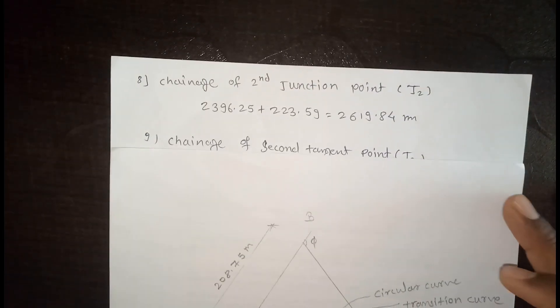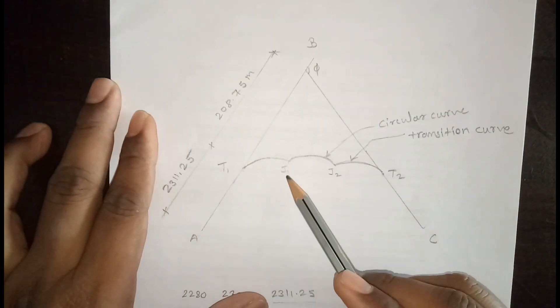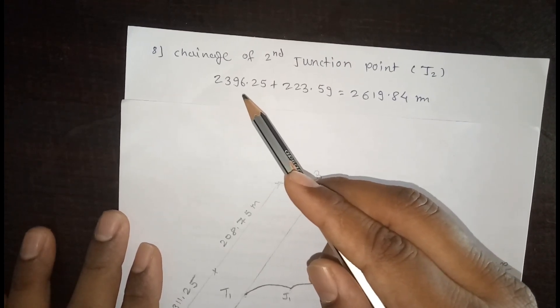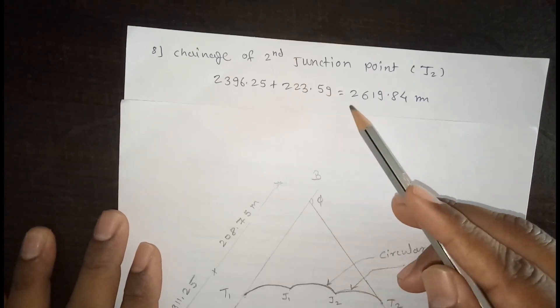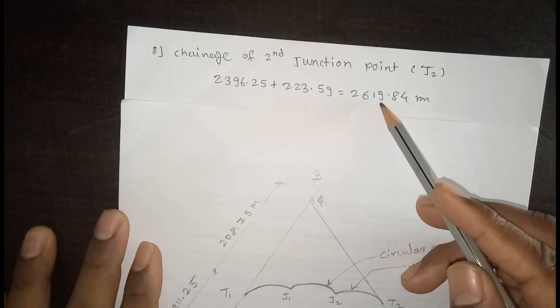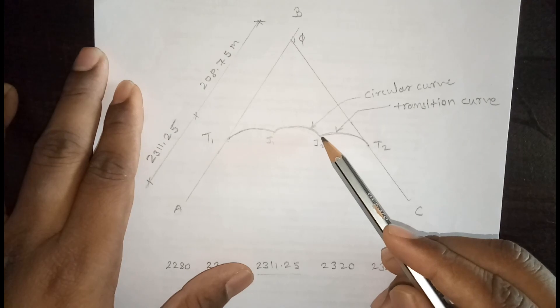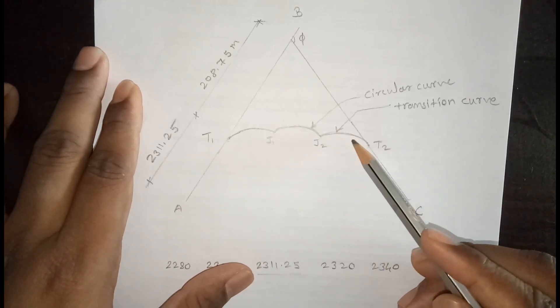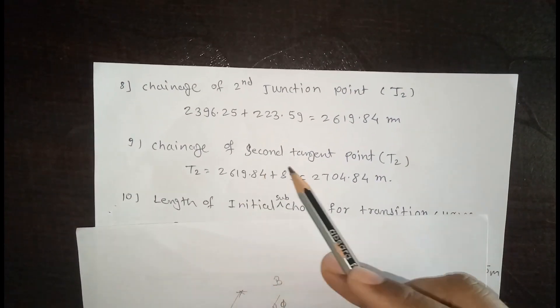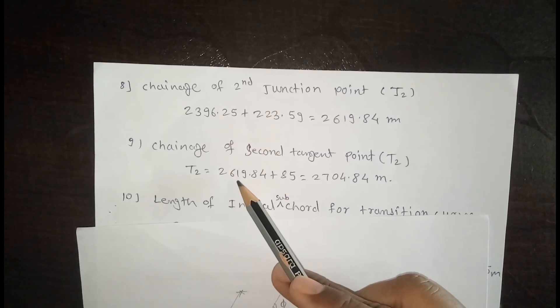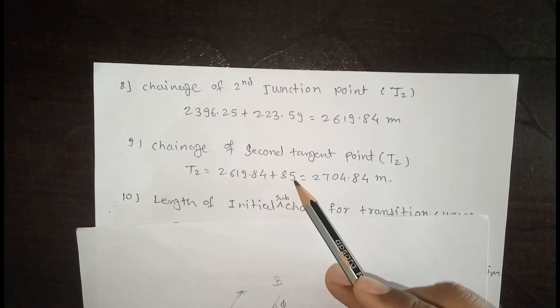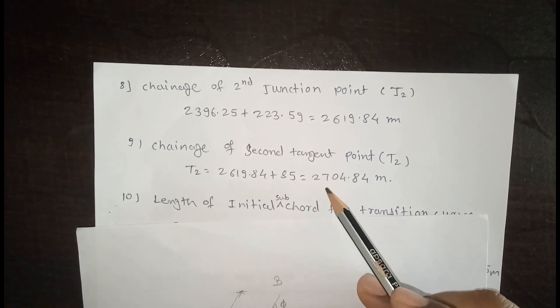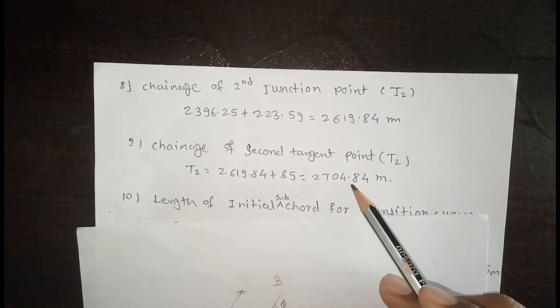The chainage of the second junction point J2 = chainage of J1 + length of circular curve. So: 2396.25 + 223.59 = 2619.84 meters. Now, the chainage of T2 = chainage of J2 + length of transition curve = 2619.84 + 85 = 2704.84 meters.